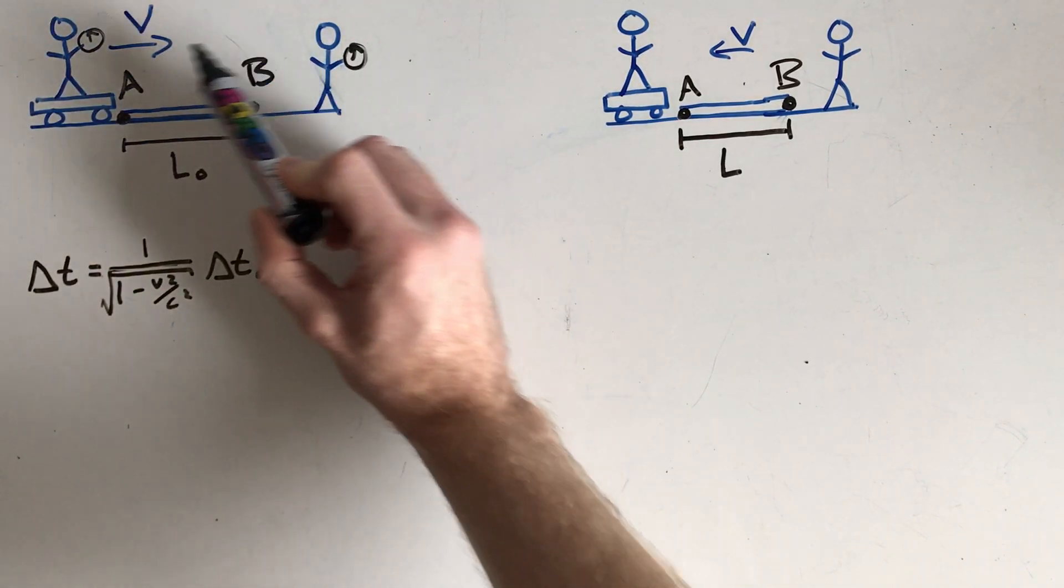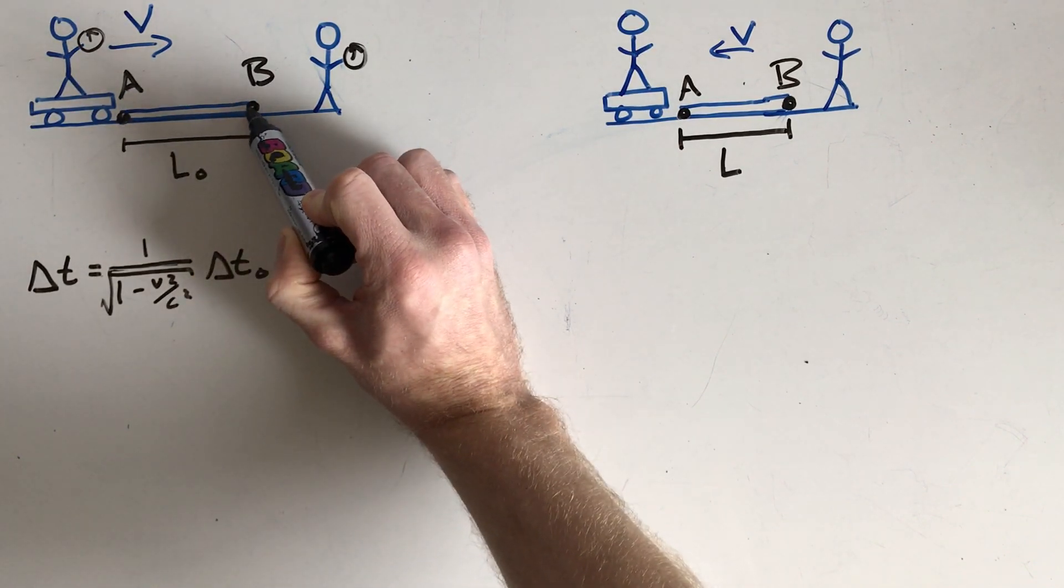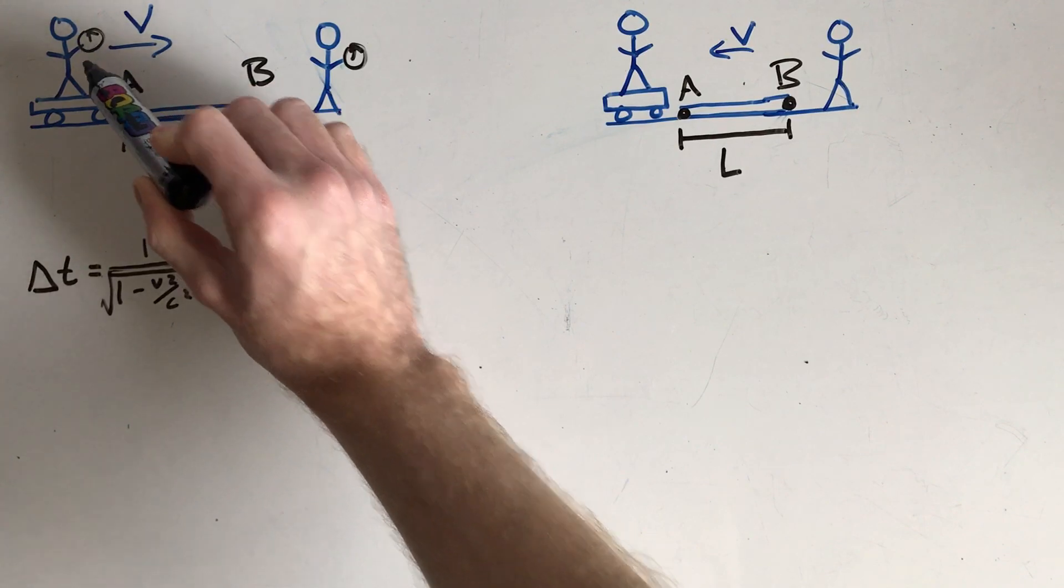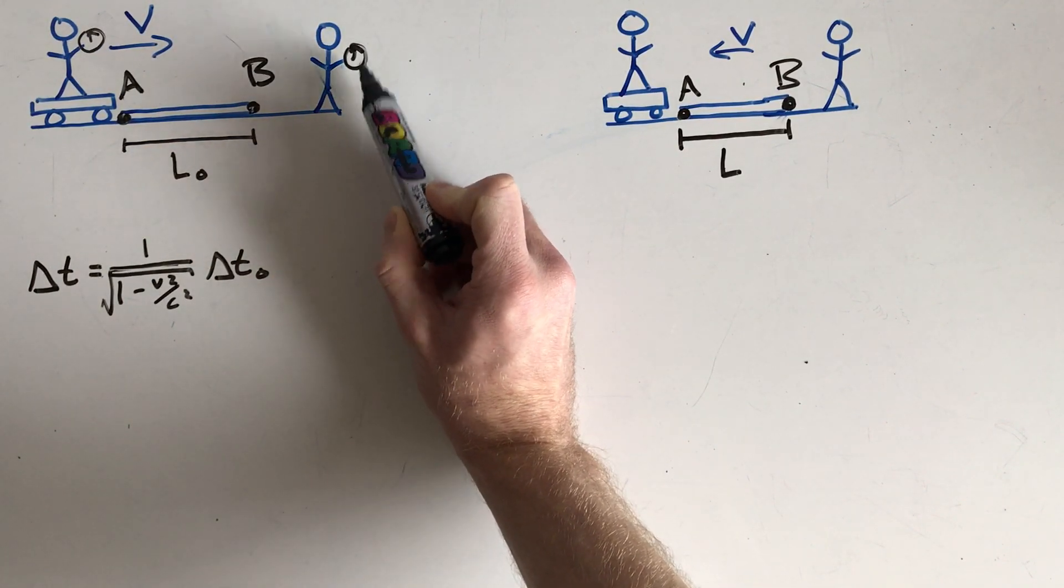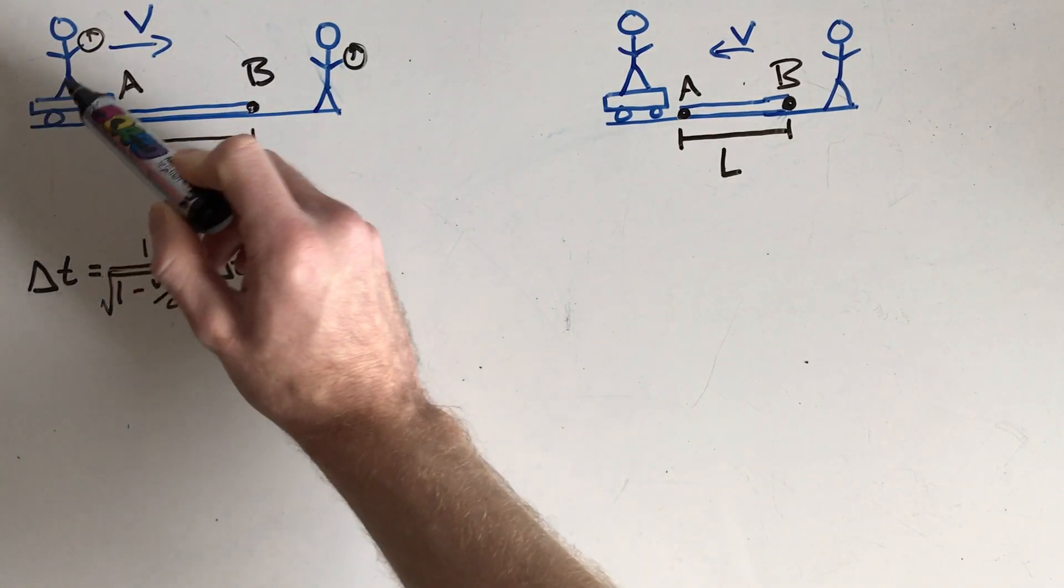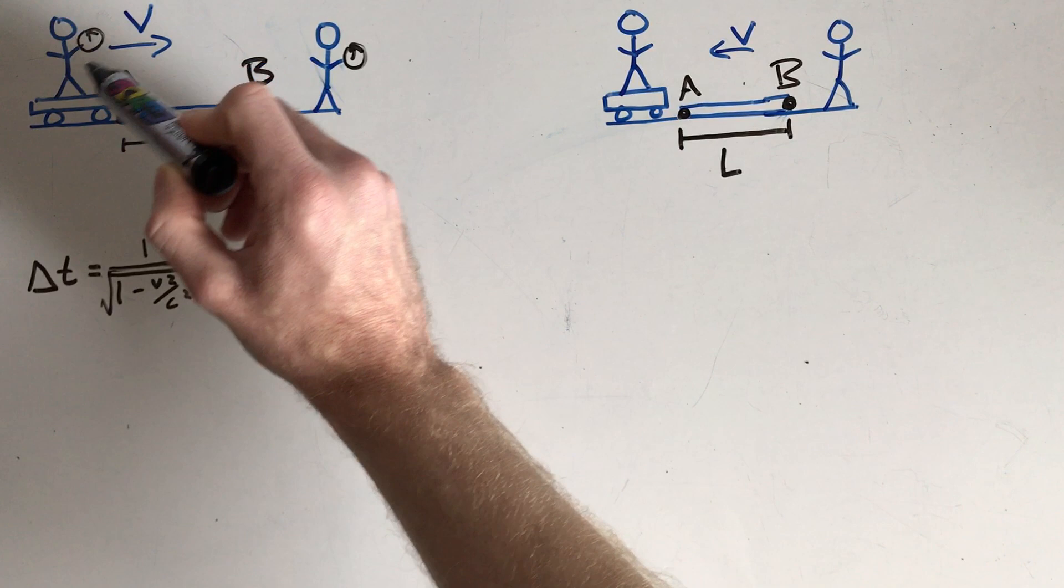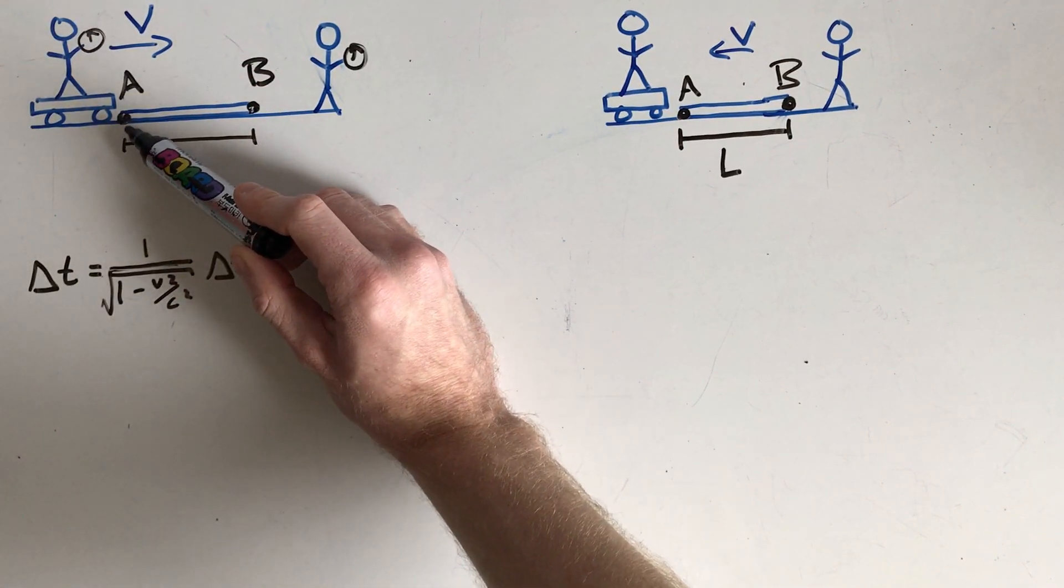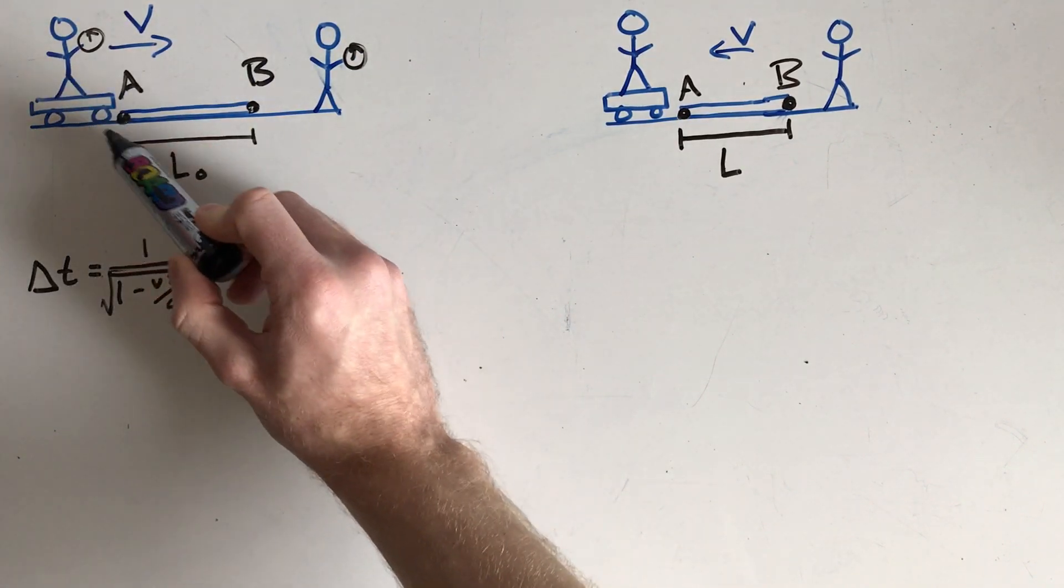If they both measure the time it takes the skateboard to get from A to B, this person will measure a different time than this person does. This person will see this person's clock as ticking slowly. Therefore, this person will measure less total time between points A and B than this person measures that it takes for them to get from A to B.